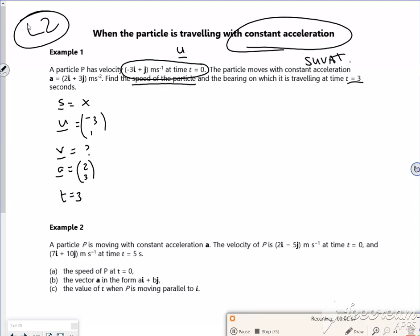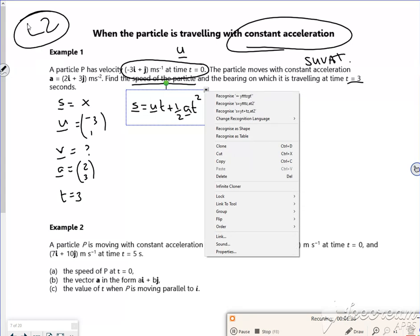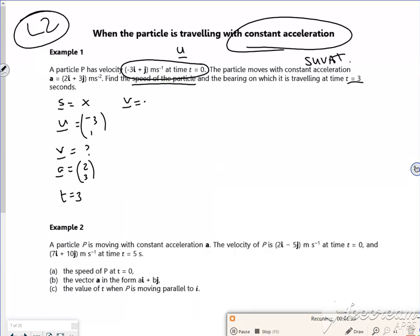Right then, so the one without v is s = ut + 1/2at². Nah, oh no, hang on, the one without s I want, you donkey. Look, I put the cross on the s. It's the v I want, so it's v = u + at.